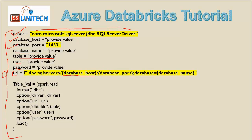After the colon we are going to supply the port name, that is 1433. Then we have to add a semicolon, and after that we need to add the database name. This will form your complete URL.